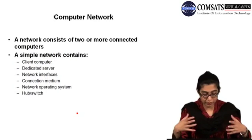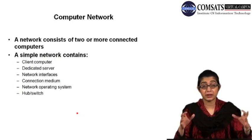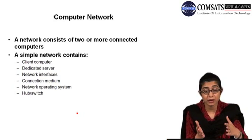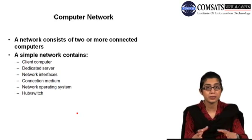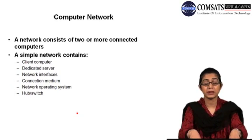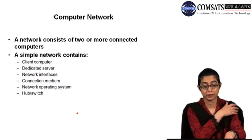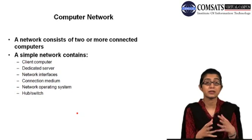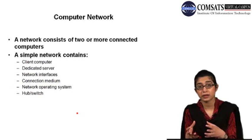What is a computer network? Basically a network consists of two or more connected computers or two or more connected devices. A simple network contains a client computer. If you are working in a business and employees have computers they use, those are called client computers. Then you have a dedicated server — any kind of server that provides resources, networking capabilities, and allows client computers to share resources such as a printer. It could be any kind of file server or web server.